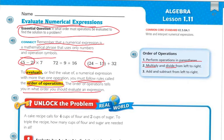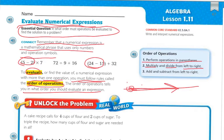It doesn't necessarily mean you have to multiply first or divide first — it's just like reading from left to right. Whatever comes first, you go in that direction. Once you've done all the multiplication and division, then you do the adding and subtracting. Same thing — it doesn't matter if adding or subtracting comes first. What's important is that you start on the left and go right, just like reading a book.